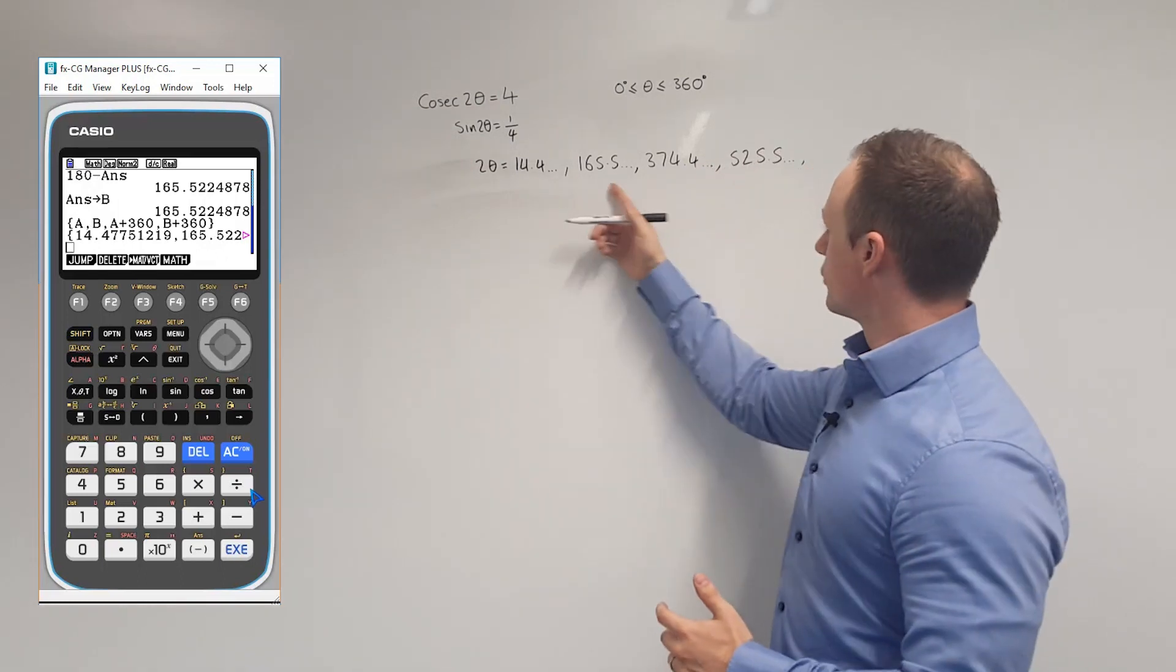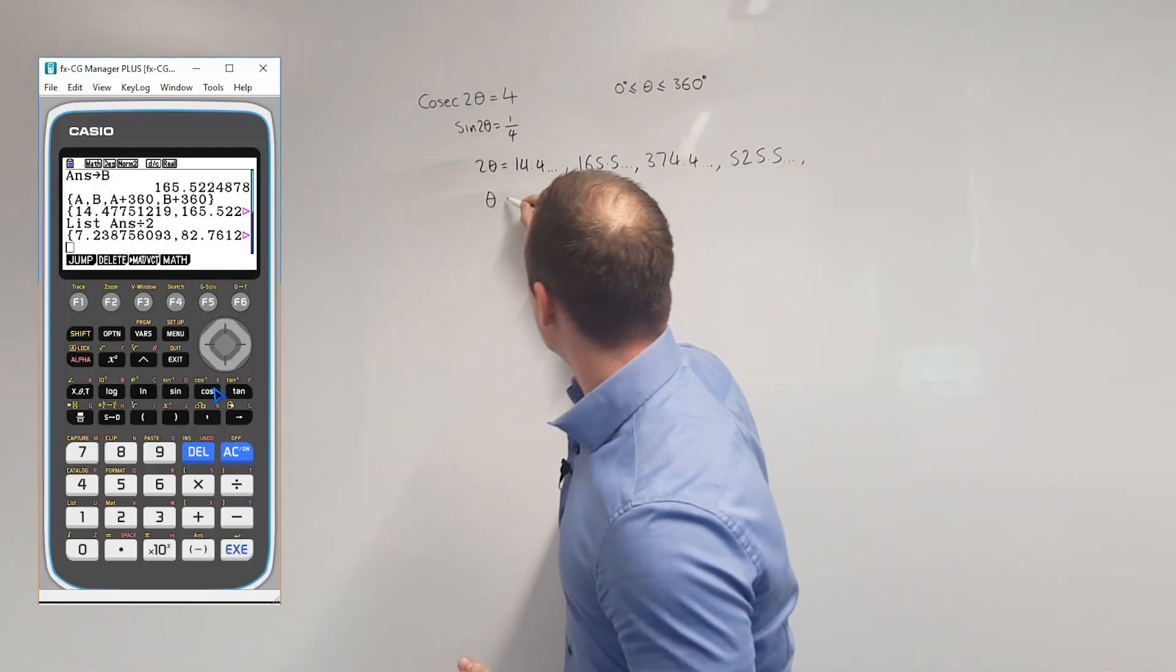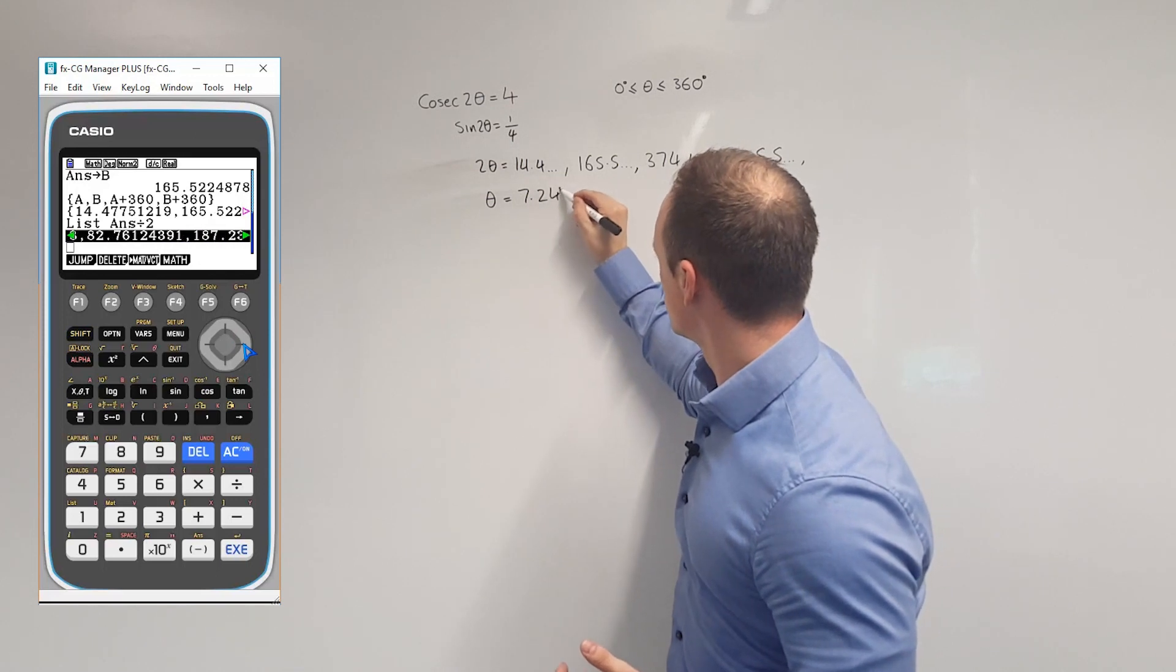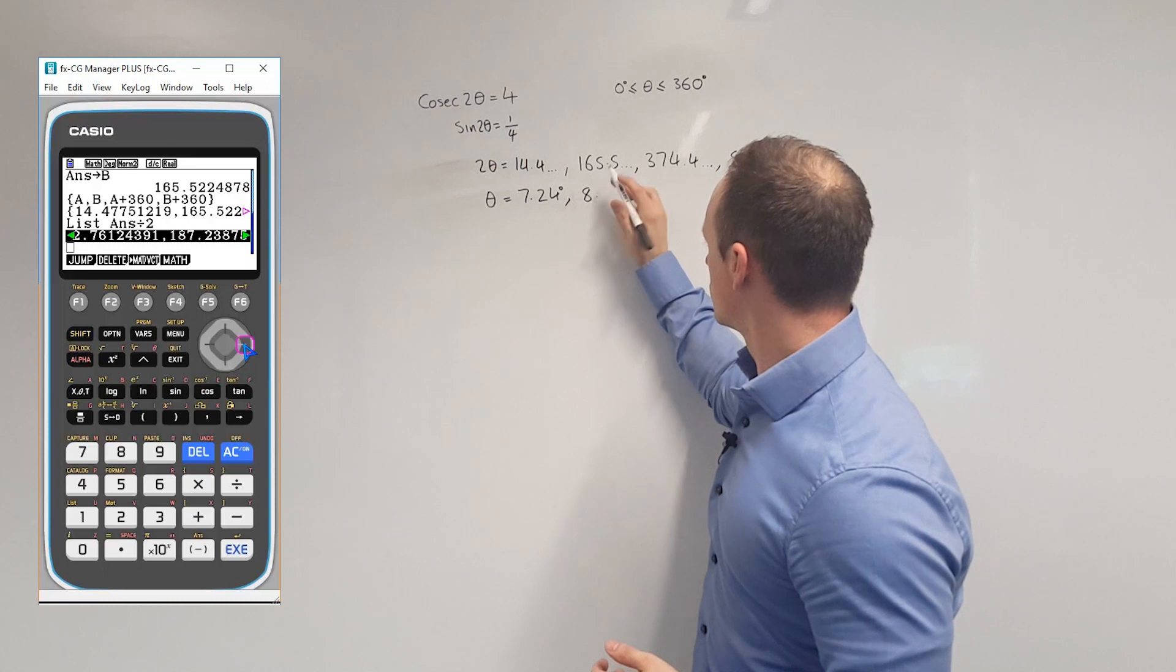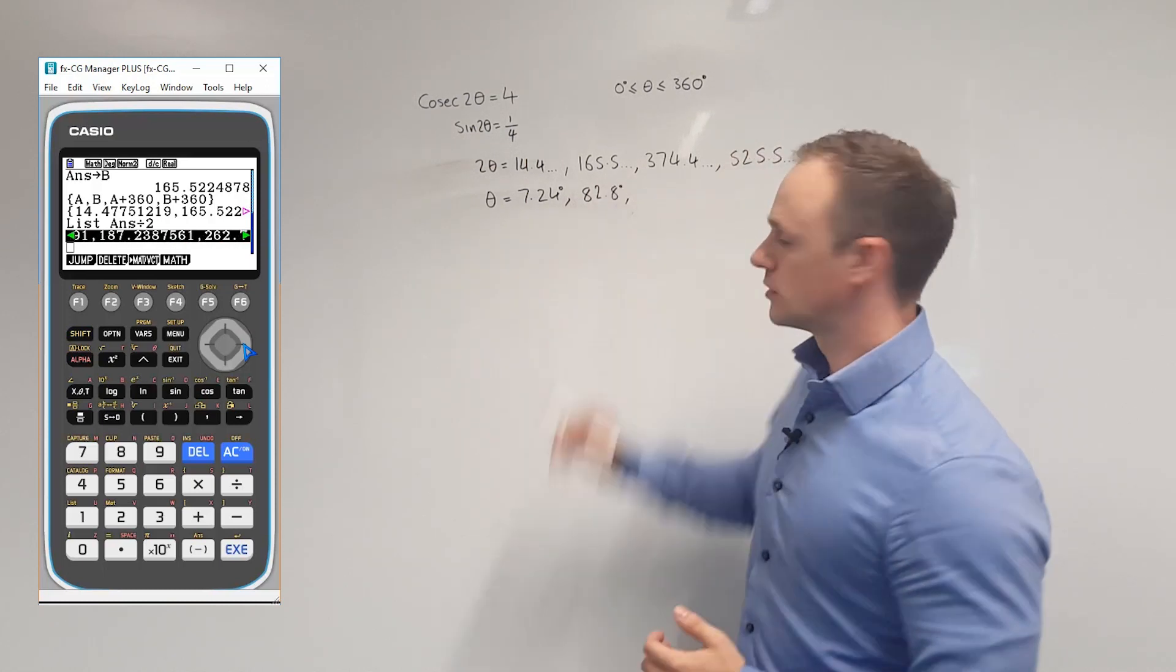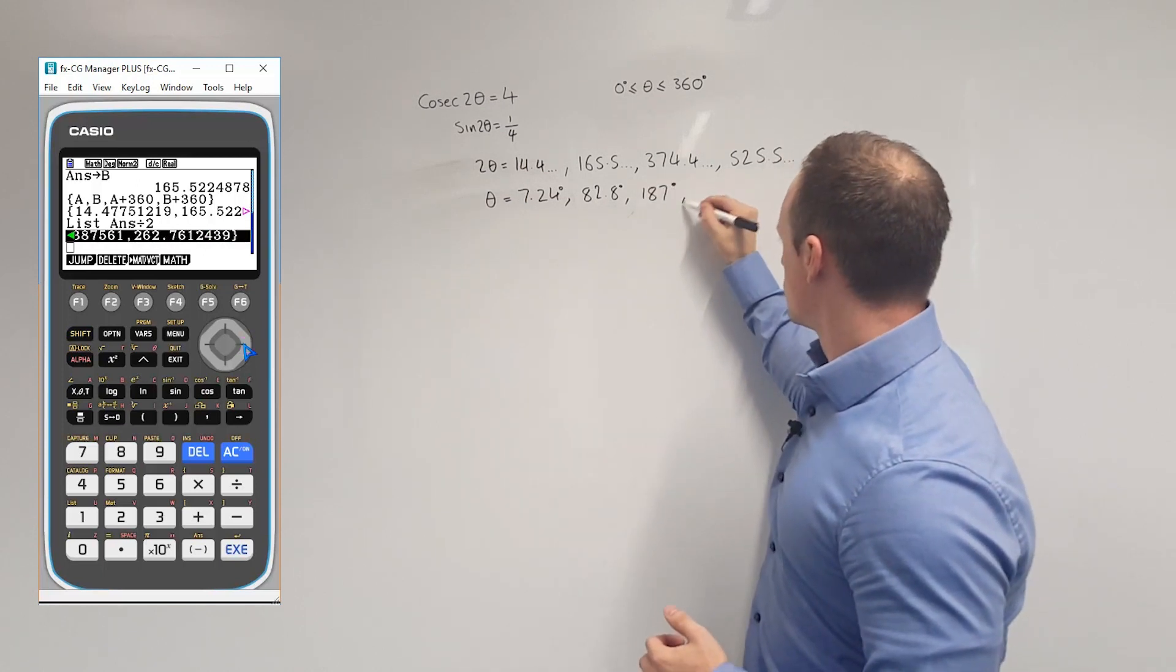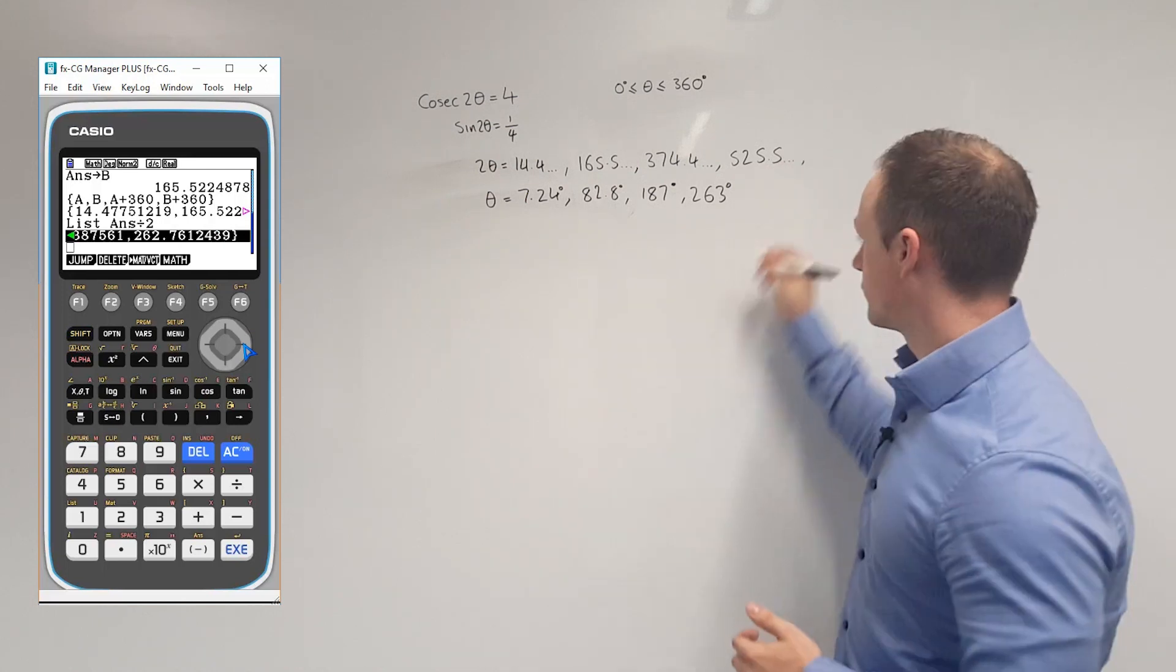Finally, we'll take all four of these solutions and then divide them by 2 to get values for θ. If we do that, we get 7.24 degrees, 82.8, 187, and 263. Each one of those given to three significant figures.